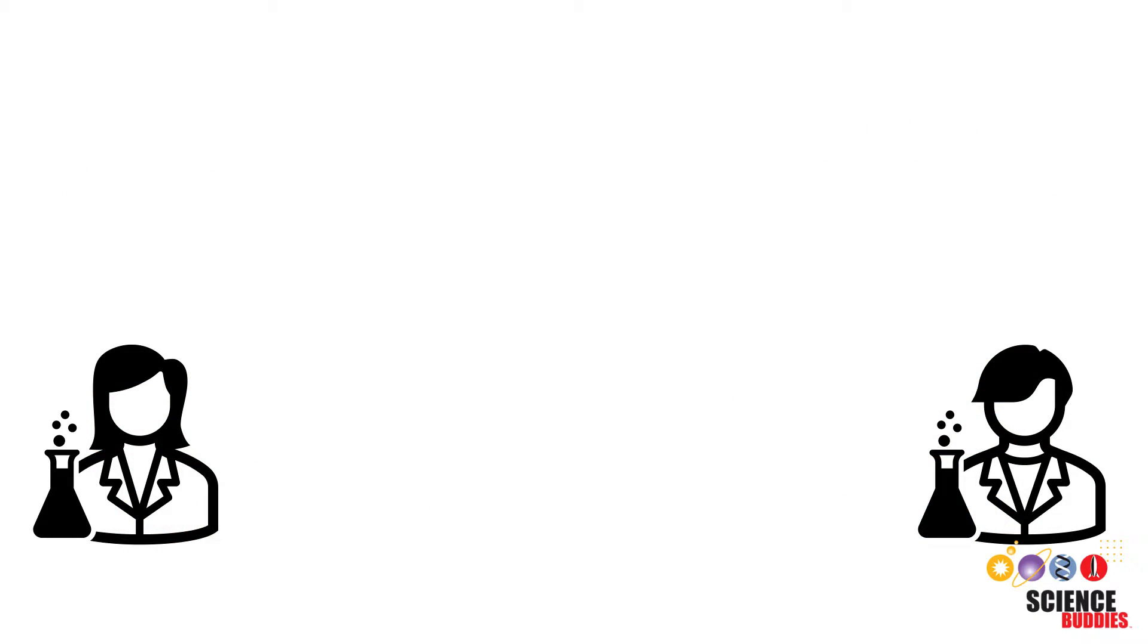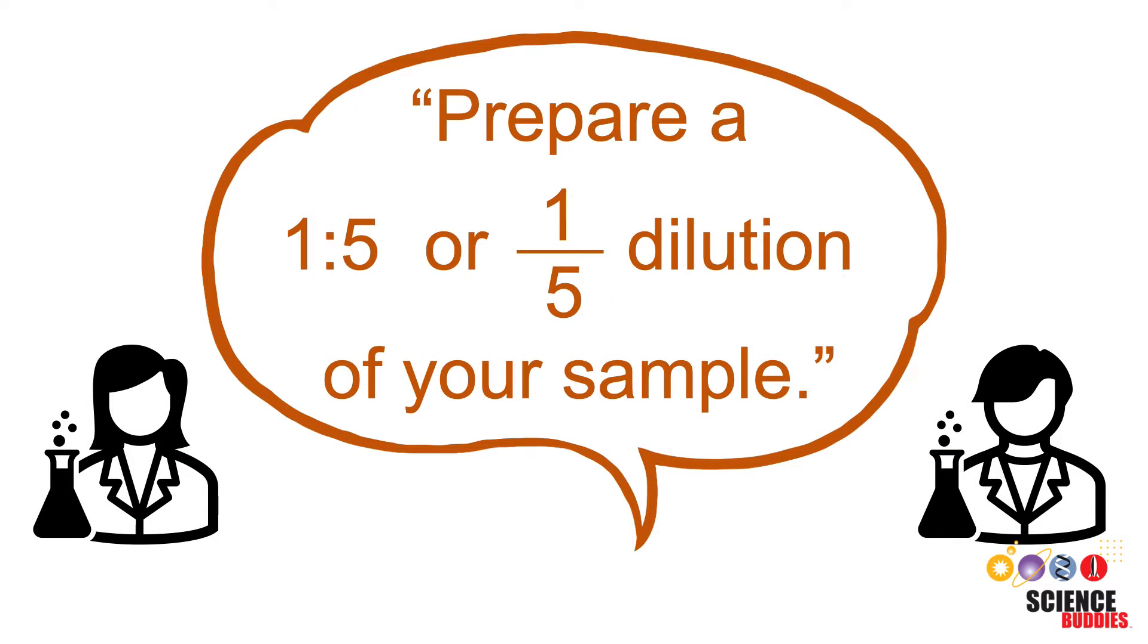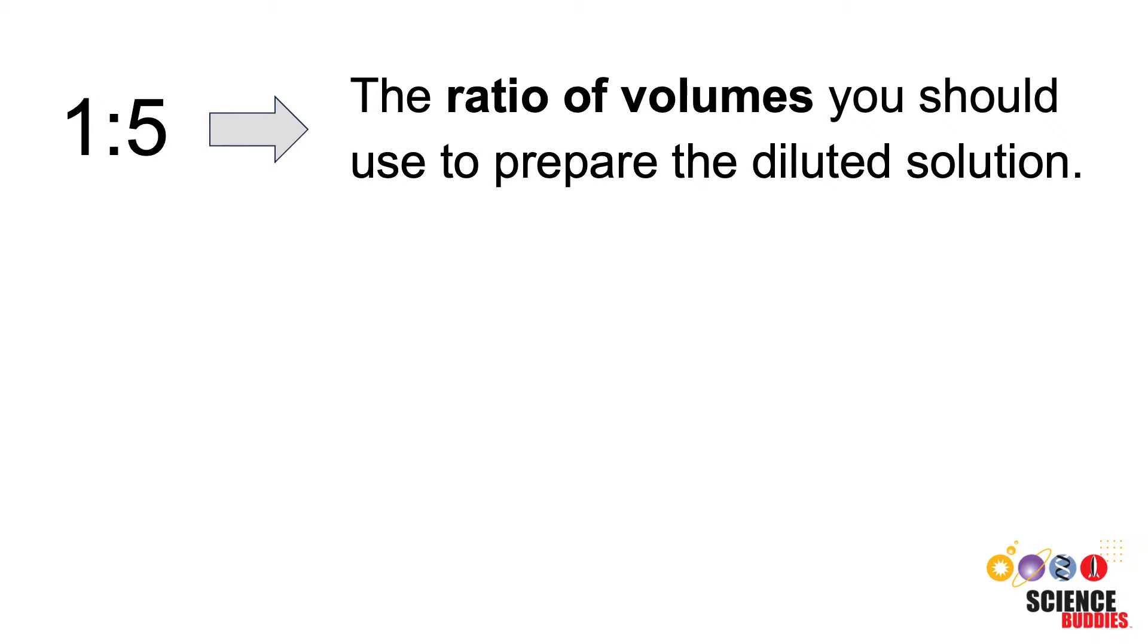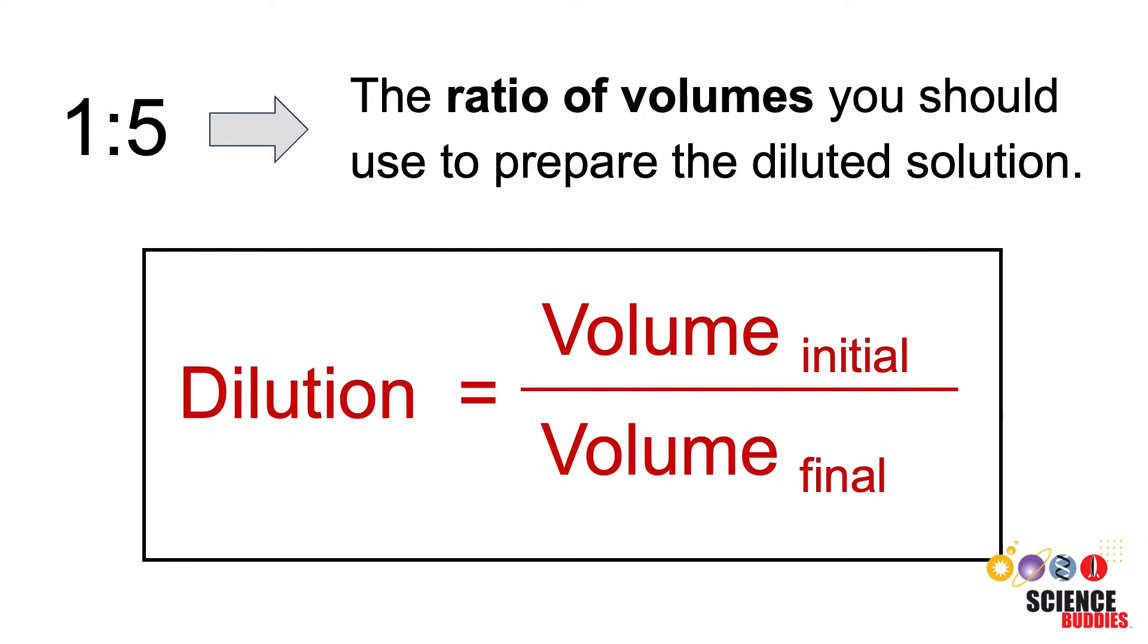Scientists often use a specific way of talking about dilutions. You might have come across something like prepare a 1 to 5, sometimes also written as 1 over 5, dilution of your sample. The expression 1 to 5 tells you what ratio of volumes you should use to prepare the diluted solution based on the following equation.